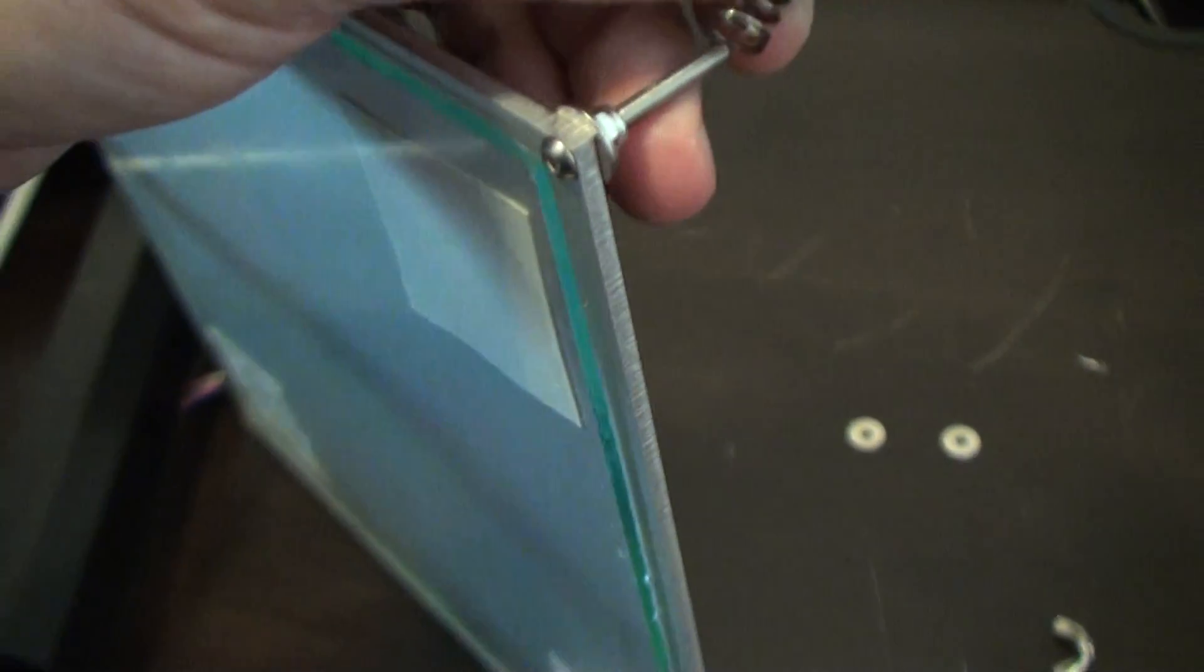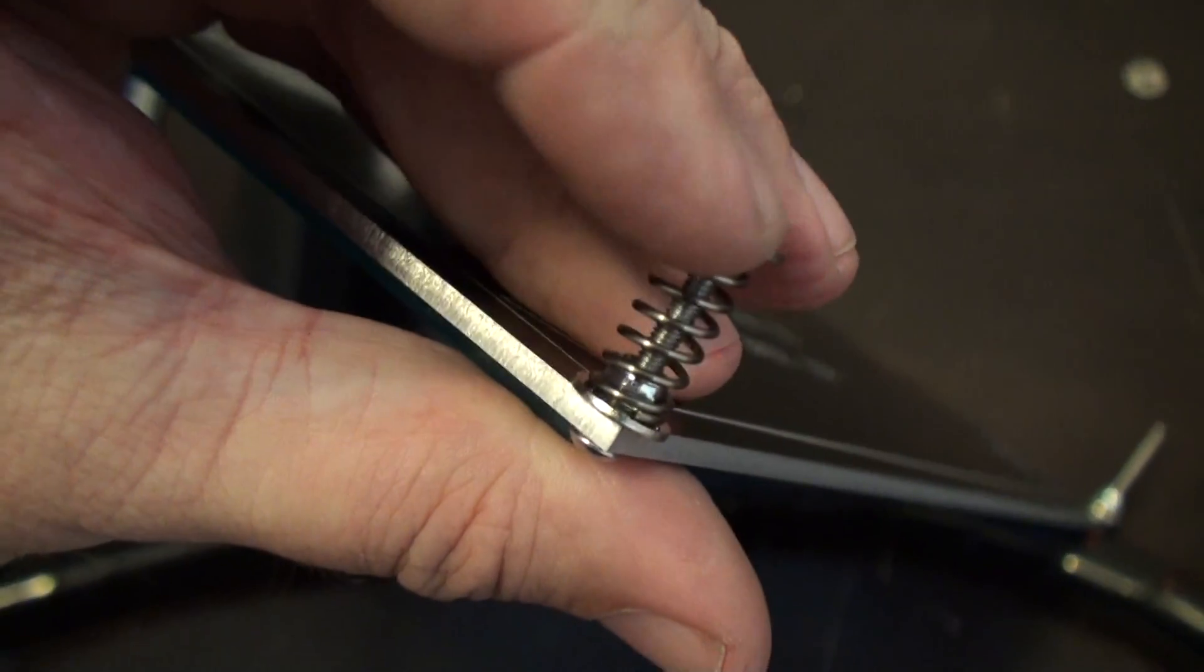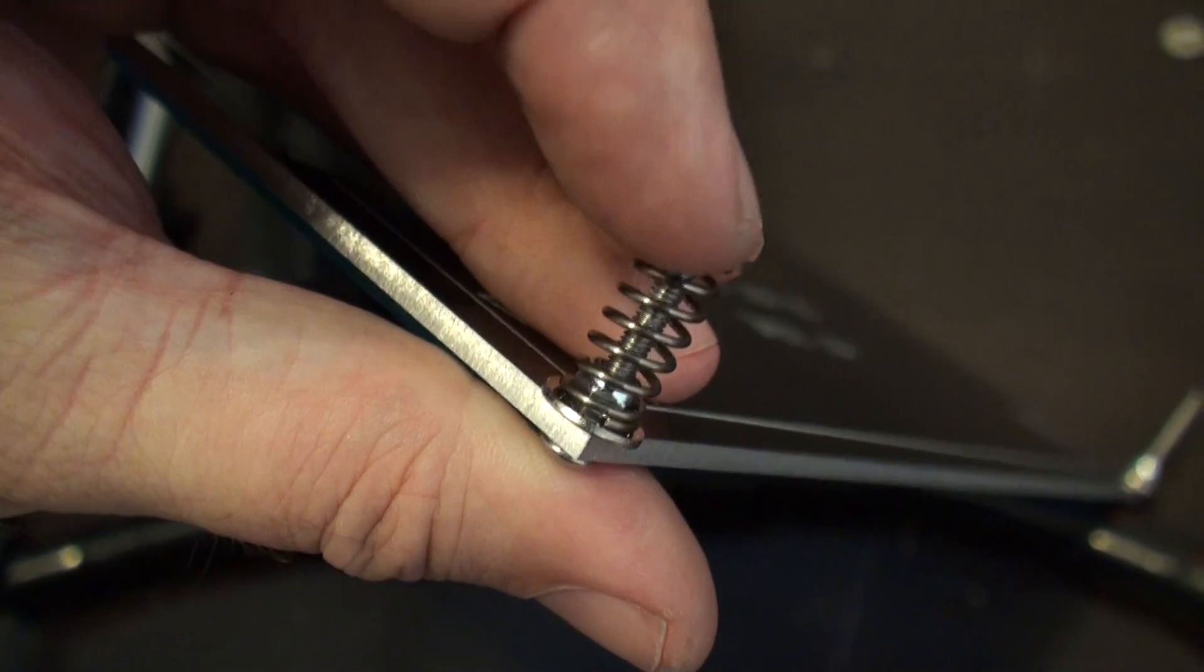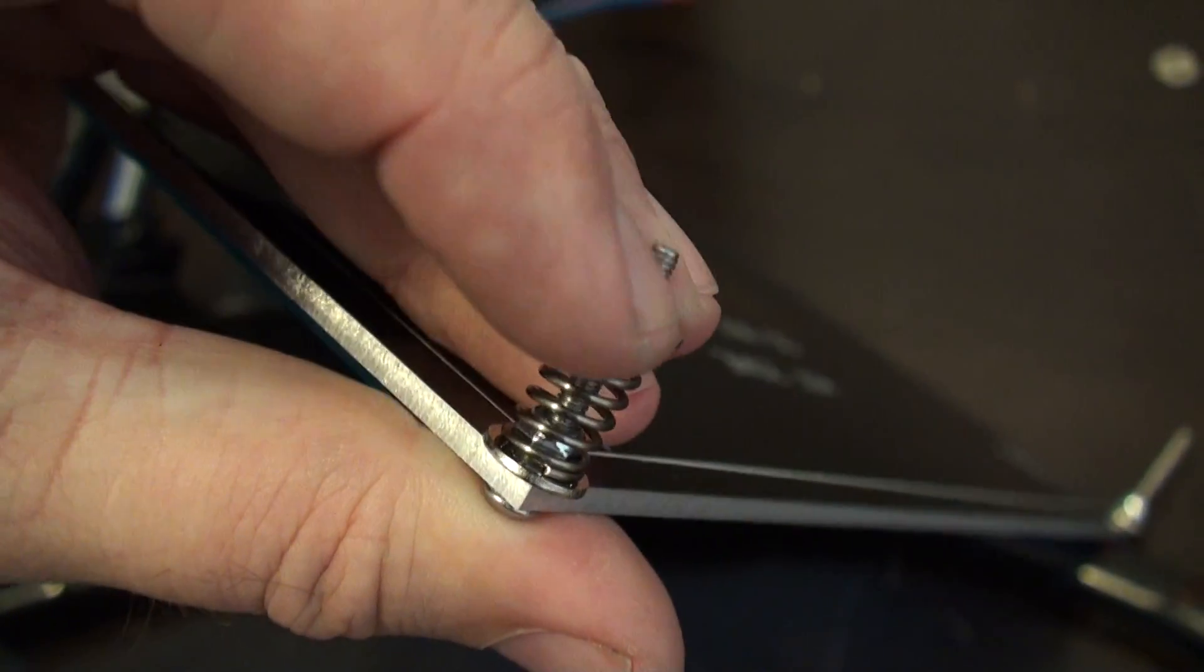So what happens is you have the washer, you put the spring over top which fits easily right over the nut and kind of helps center it too, and then you have the washer which is going to press against the bed plate.